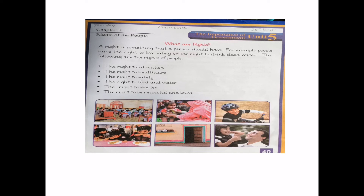The right to equal opportunities means being given the chance to be what you want — whether you are rich or poor, whatever your religion or race. And it is the responsibility of the government to see that all the citizens get these rights.